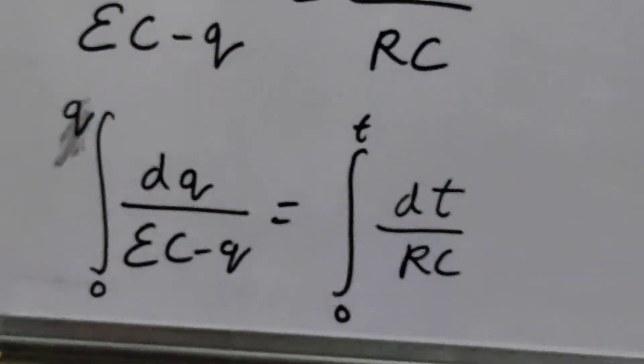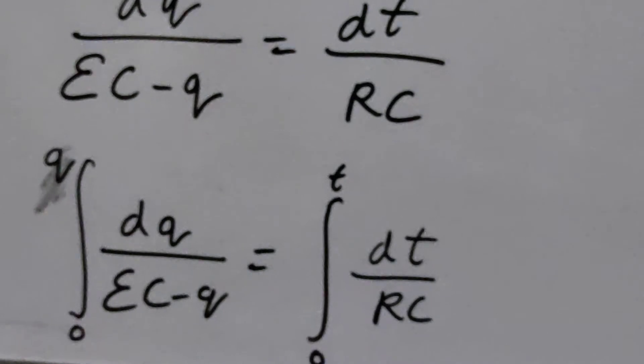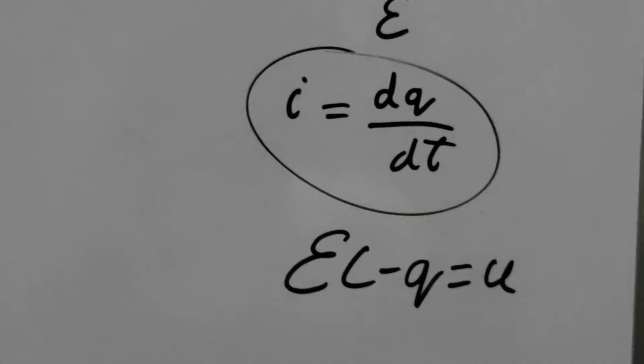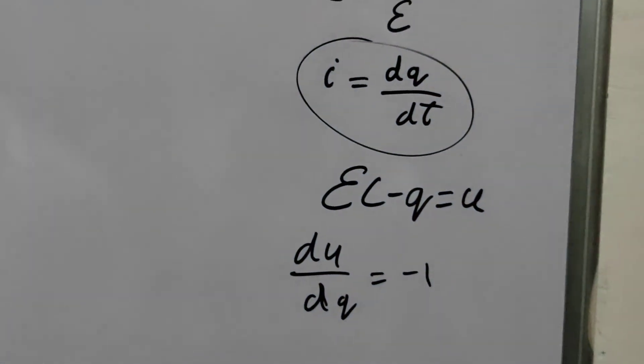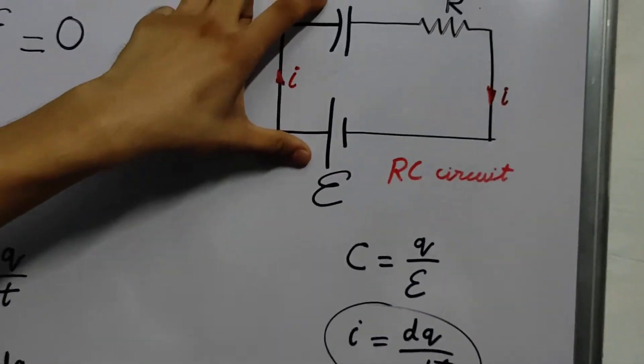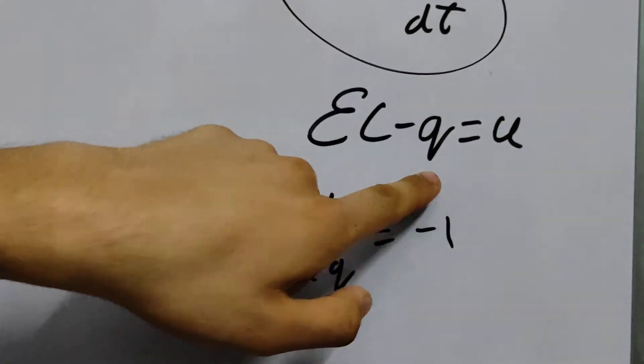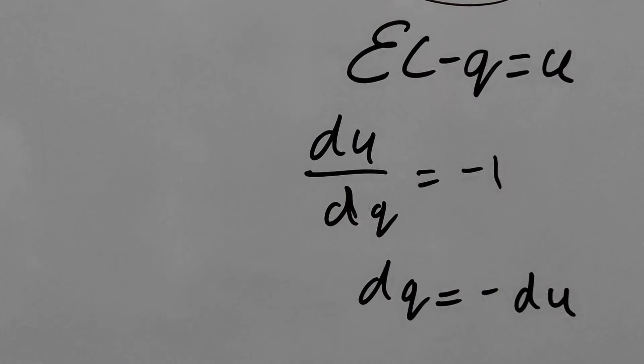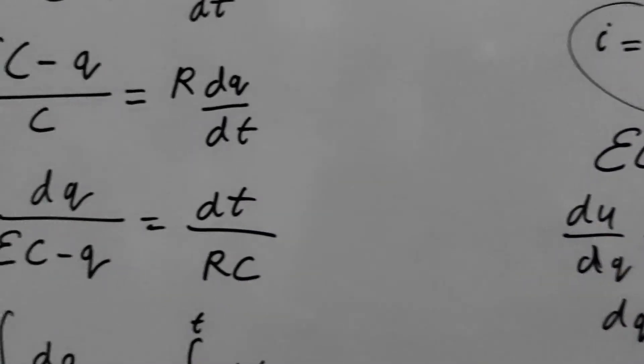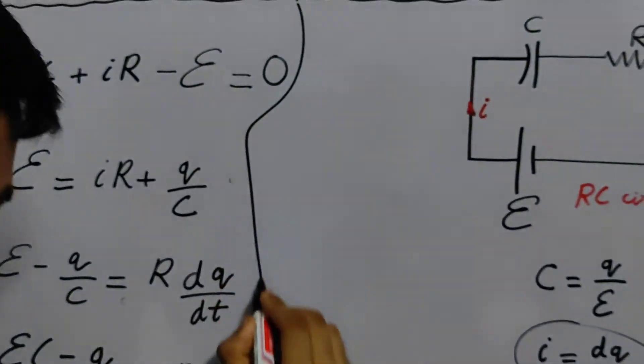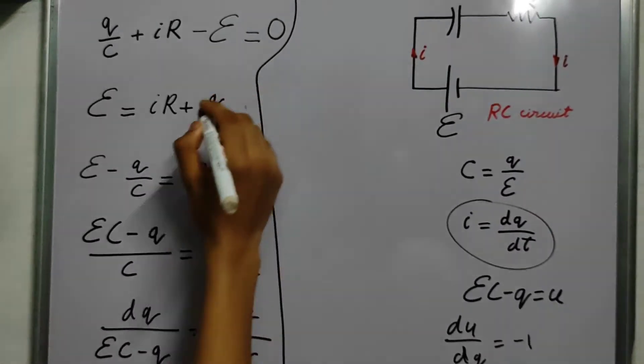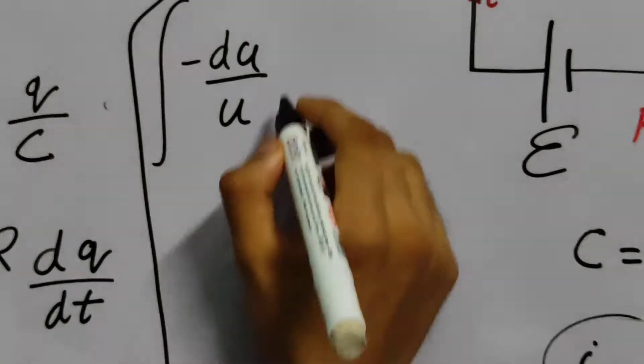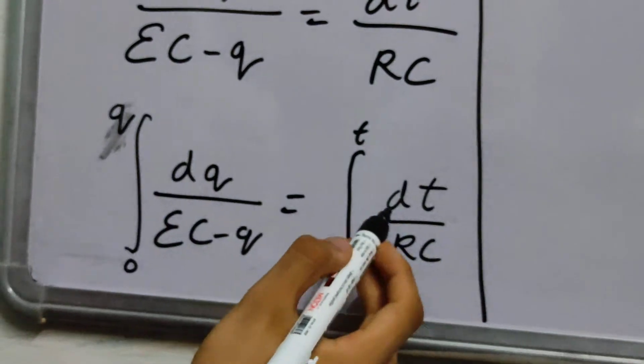Now we need to perform this integral. You can use properties of natural log or we can use substitution method. Now we can say that EC, let us take EC minus Q as U, the U function. Then we can say U by DQ is nothing but minus one. This is a constant. Its derivative becomes zero. And the derivative of minus Q, so DQ by DQ is minus one. And we can write DQ is minus DU. We can write DU with this thing as U. So DQ is minus DQ by U. And this becomes T by RC.